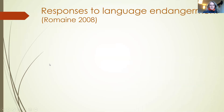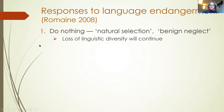In terms of responses to language endangerment, Romaine has identified three main responses. The first, and most common among governments, is to do nothing. Very often they think that if they benignly neglect language endangerment, the problem will go away. But that means linguistic diversity will continue to be lost, which to linguists is a big problem — it means the disappearance of a large amount of the subject matter of our profession.